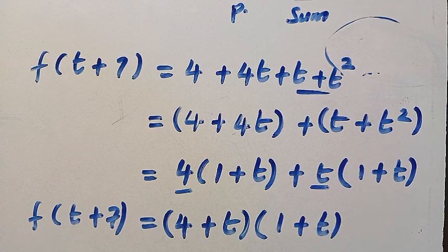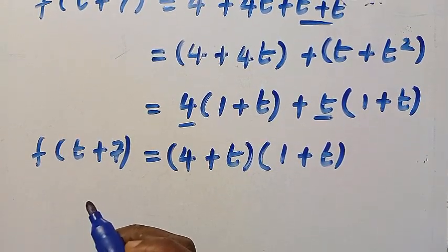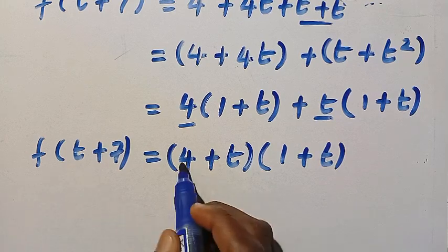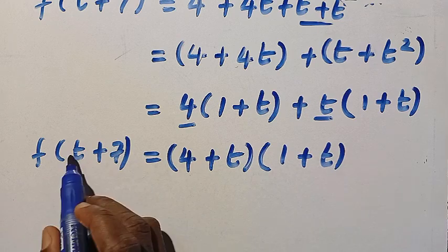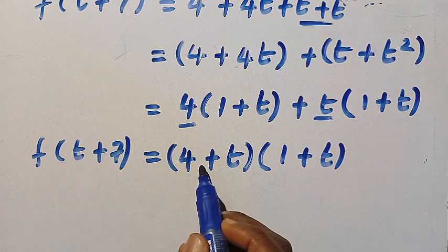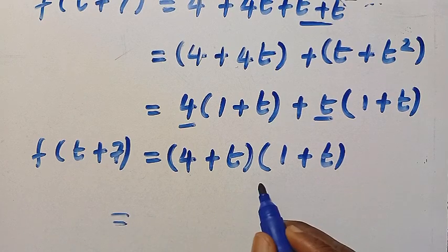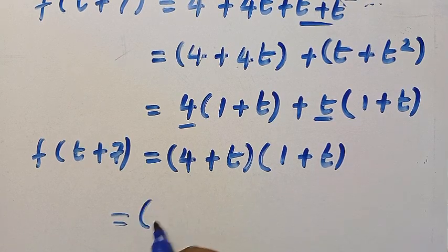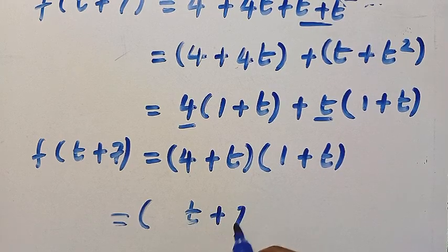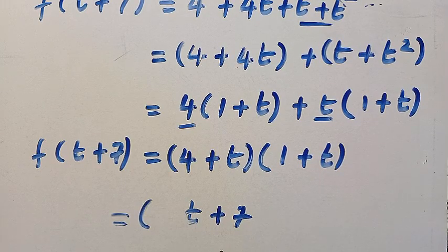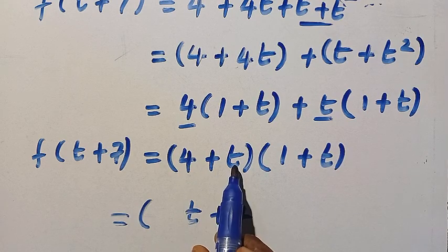So we shouldn't forget that everything here is equivalent to t plus 7. Since we have factorized this, having these two factors of the quadratic, we are trying to manipulate this as t plus 7 is the domain. And here we have 4 plus t, and here is also 1 plus t. We need t plus 7, so we need to manipulate this.